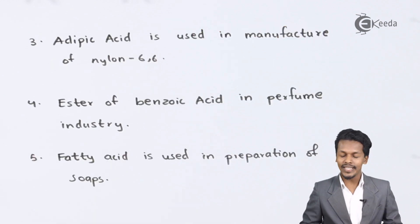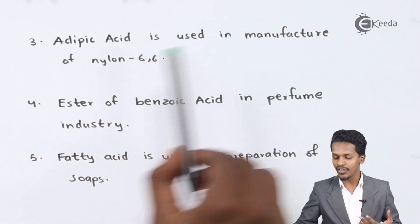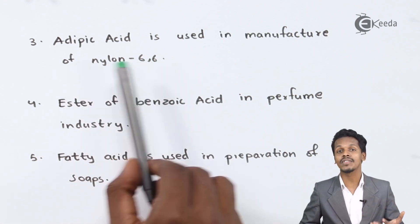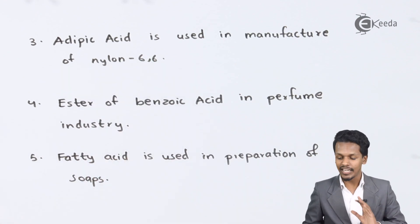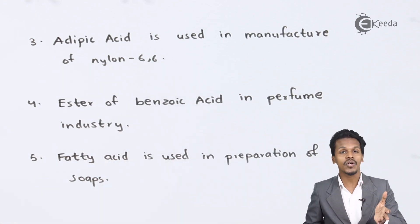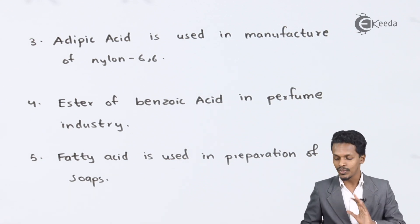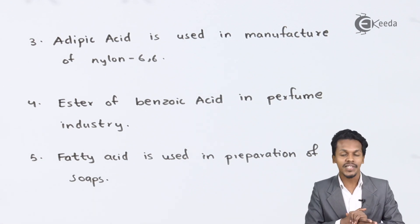Another point is that adipic acid is used in the manufacturing of Nylon 6,6. Nylon 6,6 is a polymer that is made from adipic acid and hexamethylene diamine. This is how we can prepare Nylon 6,6.